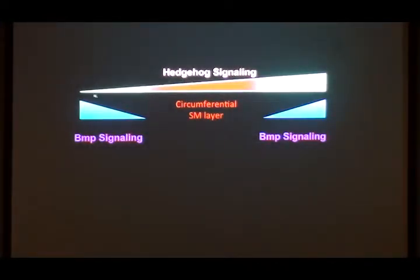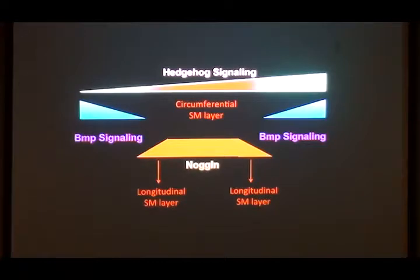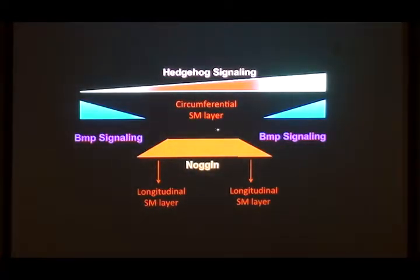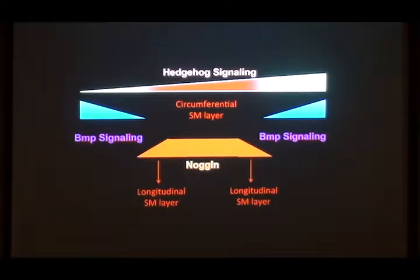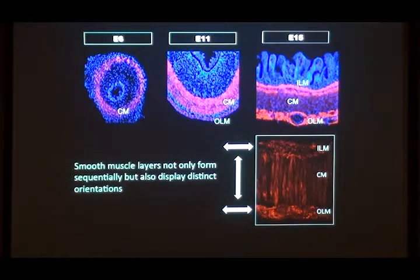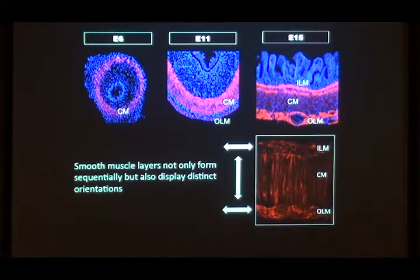You start by having hedgehog signaling inducing smooth muscle, blocked out at the periphery and near the endoderm by BMP signaling. Then this layer produces Noggin, and when Noggin comes on it pushes these gradients back, allowing longitudinal layers to form on either side. But that's only half the puzzle — the other half is that these layers also have orientation. They've got cells going longitudinally and circumferentially, and in and out of the plane of the board. So how do they get the right orientation?